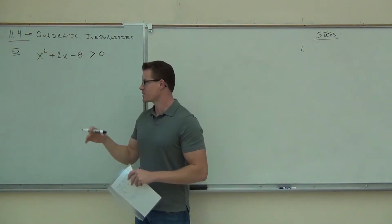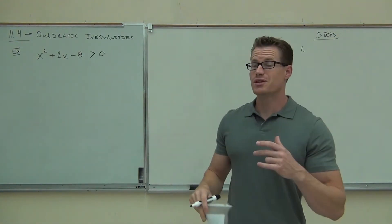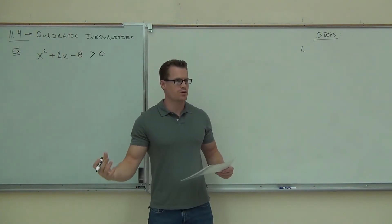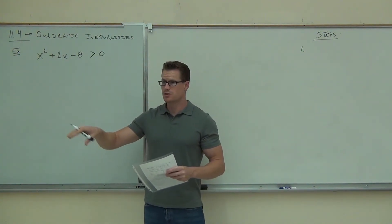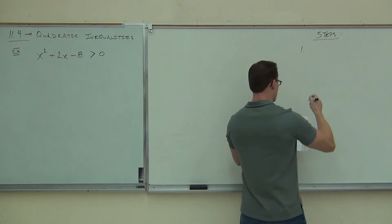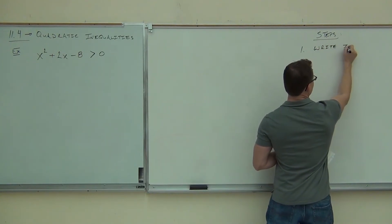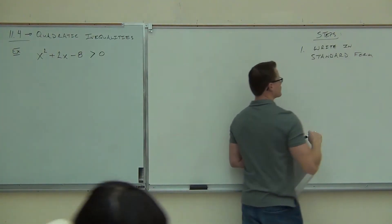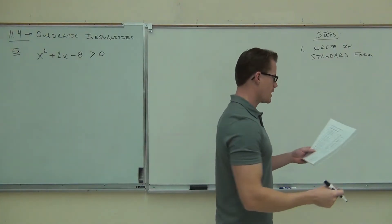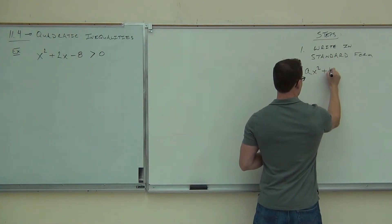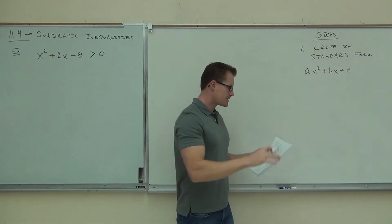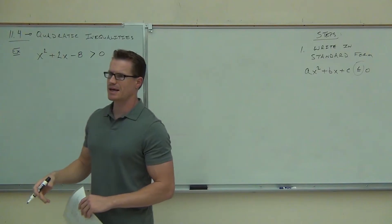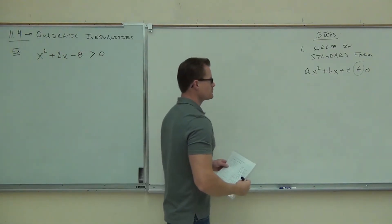Here are your general steps. Step one: make sure the expression is in standard form, which means everything on one side and zero on the other. The only way we know how to work with quadratics is with everything on one side and zero on the other. The inequality can be less than, greater than, or greater than or equal to — any of those.